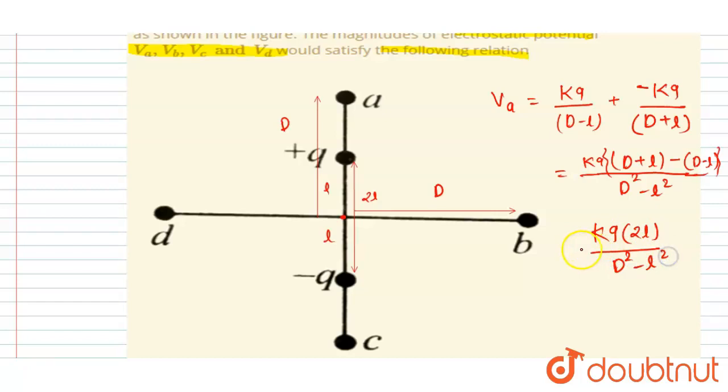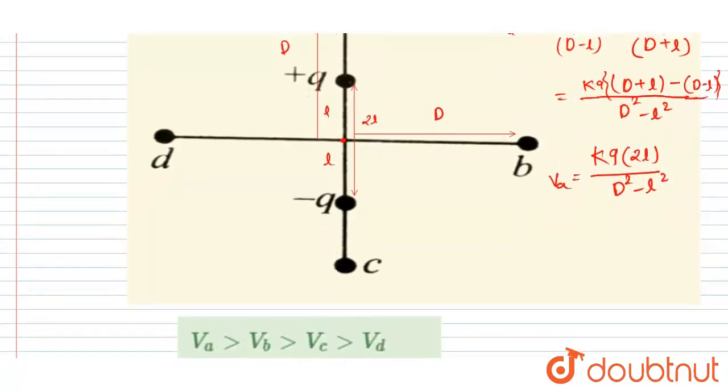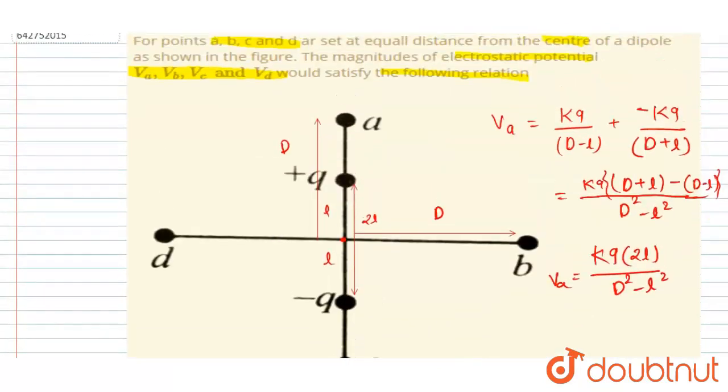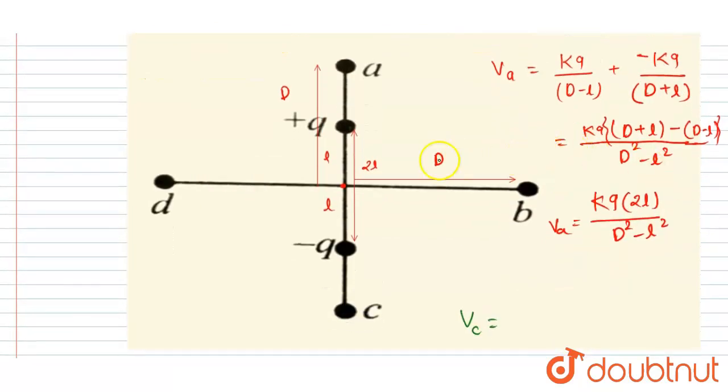Now you can also find out the potential at c. So I will write the potential at c. So if you see, if I talk about the potential at c, right? So now our negative charge is at the same distance as that of positive charge in case of Va.